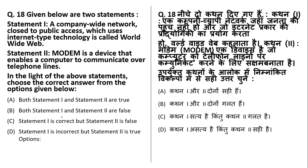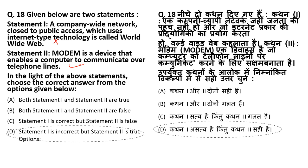Two statements: Statement 1 says a company-wide network closed to public access which uses internet-type technology is called worldwide web — this is not true. In a company-wide network, you use an intranet, not the worldwide web. Statement 2: a modem is a device that enables a computer to communicate over telephone lines — yes, this is true. So statement 2 is true while statement 1 is incorrect, and D is the right answer.